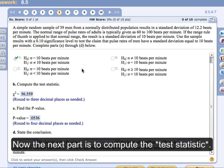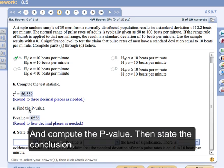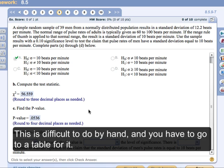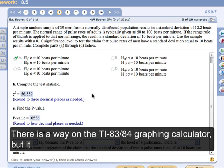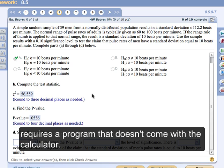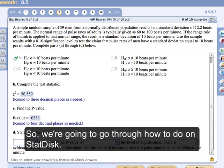Now the next part is to compute the test statistic, compute the p-value, and then state your conclusion. And this is difficult to do by hand. I mean, you have to go to a table for it. There is a way to do it on the TI-83 or 84 graphing calculator, but it requires a program that doesn't come with the calculator. So we're going to go through how to do this on StatDisk.